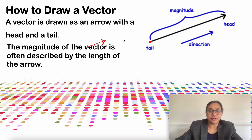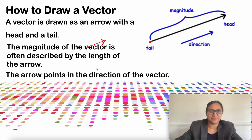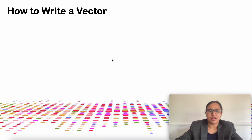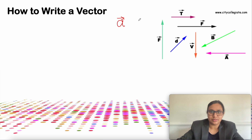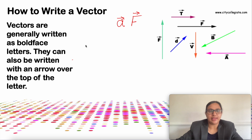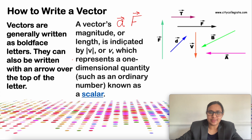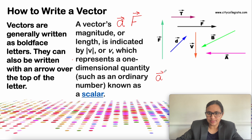The magnitude of the vector is often described by the length of the arrow, and the arrow points in the direction of the vector. How do you write a vector? Vector quantities are usually written in boldface letters — either capital or small. For example, acceleration can be written as a small letter 'a' with an arrow mark on top, and force can be written similarly with an arrow mark. A vector's magnitude is indicated by |V| or simply V. If acceleration A is written as a vector, its magnitude is simply written as A.